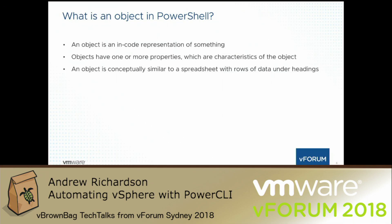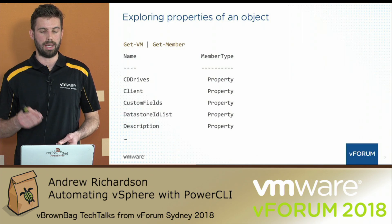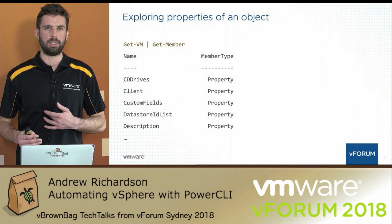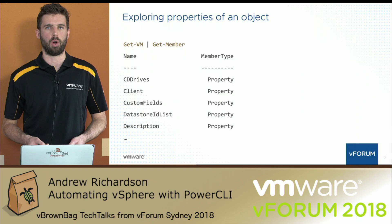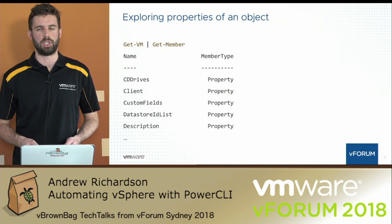So how do we explore the properties of an object? We know that we want to take a look at a virtual machine and understand what the different properties are within a virtual machine object. We can use the Get-VM cmdlet and pipe it to Get-Member, which will output a list of all the different properties contained within the virtual machine object type. The output is a table of property names and their member type. In your own environment you'll see more like 30 or 40 different attributes that come with a virtual machine object, and every object within PowerCLI will have a different set of properties.